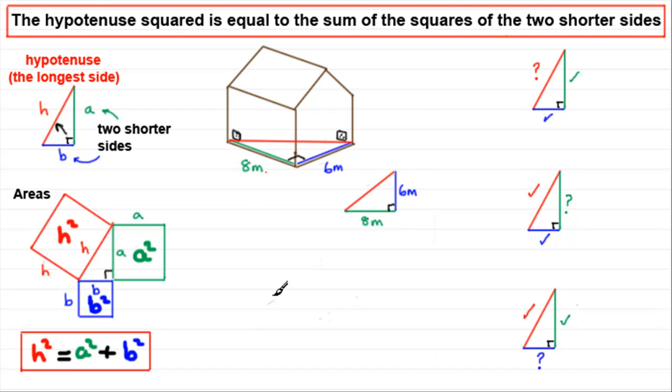Returning back to the building problem here, we can find the distance from one corner to the other by using this theorem. This side, we know, is the hypotenuse and we can label it H. By the theorem, we've got that H² equals the sum of the squares of the other two shorter sides, so that would be 8² + 6², or you could write 6² + 8²—it's not going to matter which way round you do this.